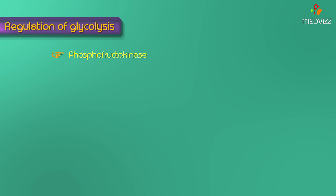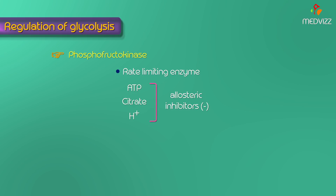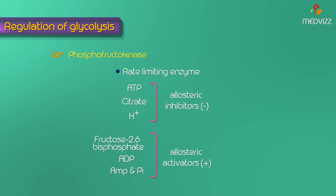Phosphofructokinase is the most important rate-limiting enzyme for glycolysis. ATP, citrate, and hydrogen ions are important allosteric inhibitors — if ATP is already present in the cell, there is no need for glycolysis to continue. Similarly, if intermediates of the citric acid cycle accumulate, glycolysis is inhibited. Fructose 2,6-bisphosphate, ADP, AMP, and inorganic phosphate are allosteric activators — if ADP is plentiful in the cytosol, it indicates low ATP, so glycolysis must proceed to convert ADP to ATP.